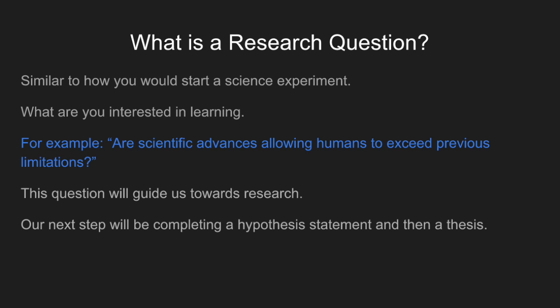The first thing is to think about what you're interested in learning. Our central question for this course is a philosophical one: what makes us human? A potential research question might be: are scientific advances allowing humans to exceed previous limitations? That's a narrower question. I've steered away from just genetics, DNA, or artificial intelligence — though those would also be viable. This question allows me to begin research and develop a hypothesis and eventually a thesis statement.